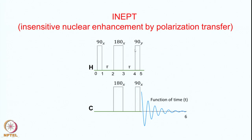You need to be careful with regard to the phases of the pulses. Here it is a 90x pulse; the 180 can be x or y, it does not matter. But crucially, if the proton pulse is 90x, the second proton pulse has to be 90y — there must be a 90 degree phase shift between these two 90 degree pulses. The carbon 90 pulse can be 90x or 90y, it does not matter.